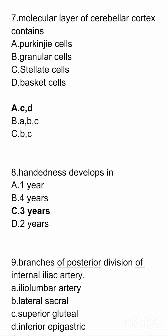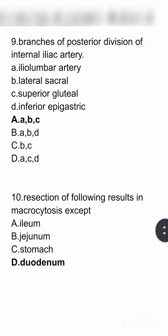Branches of the posterior division of the internal iliac artery — options are iliolumbar artery, lateral sacral artery, superior gluteal artery, inferior epigastric artery. The answer here is A, B, C: iliolumbar artery, lateral sacral artery, and superior gluteal artery.